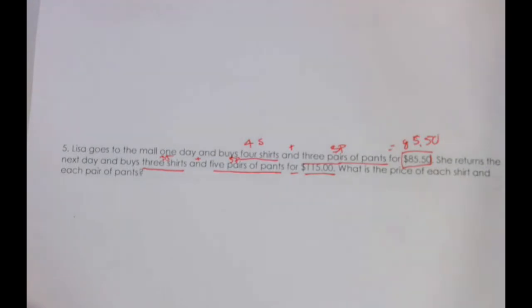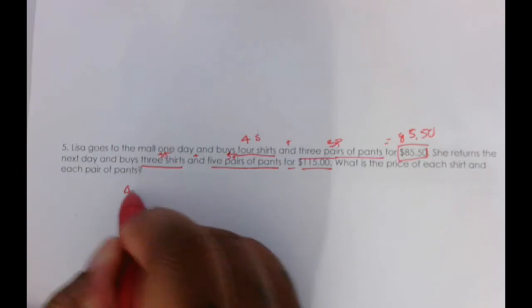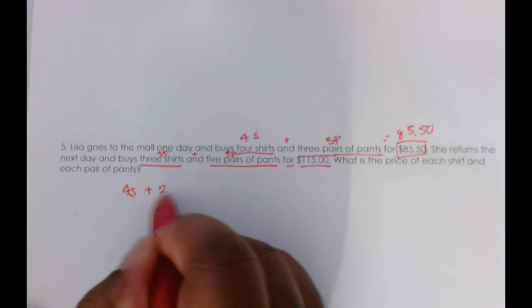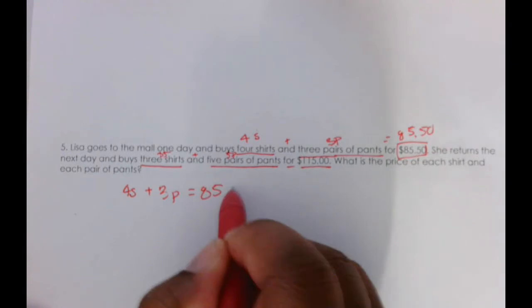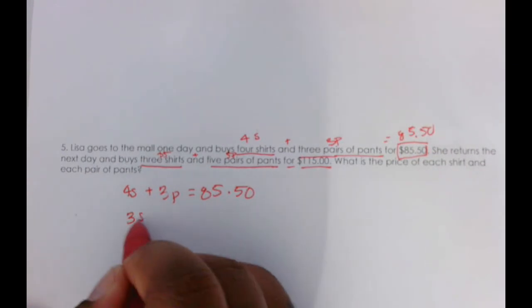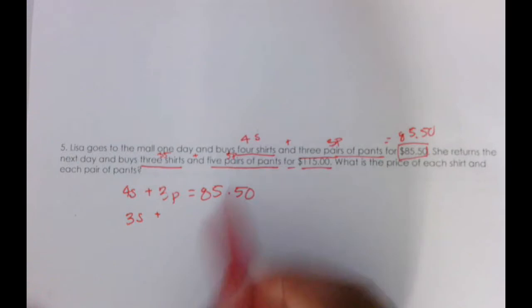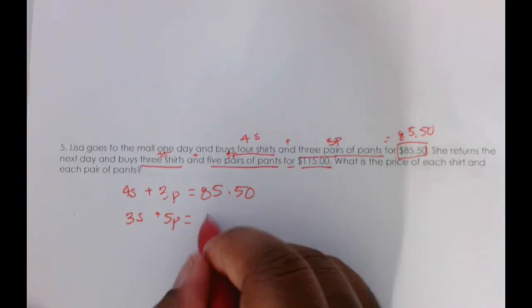This annotating this kind of problem gives you the equations right away. So I have 4s plus 3p is going to equal 85.50.